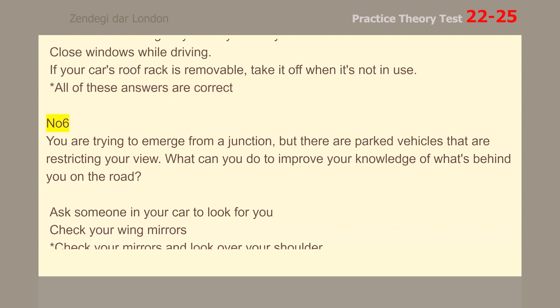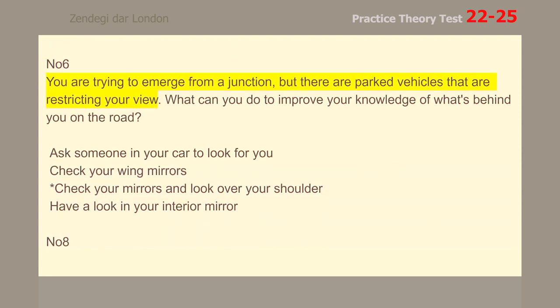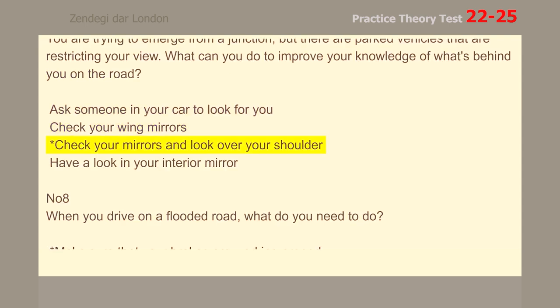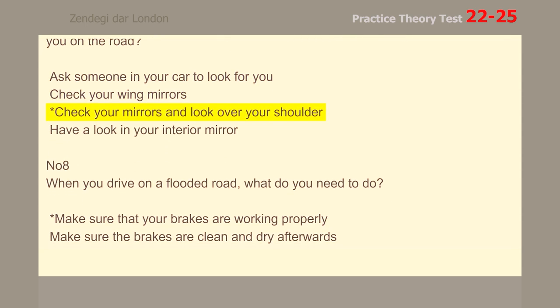Number 6. You are trying to emerge from a junction, but there are parked vehicles that are restricting your view. What can you do to improve your knowledge of what's behind you on the road? Check your mirrors and look over your shoulder.